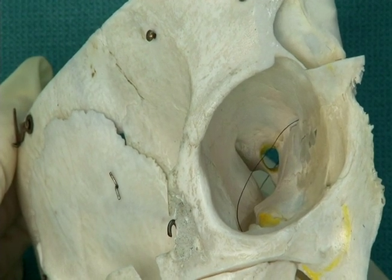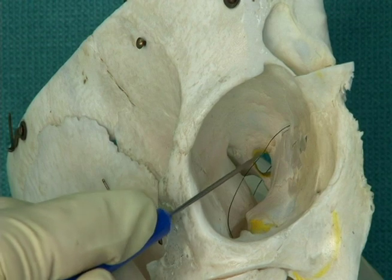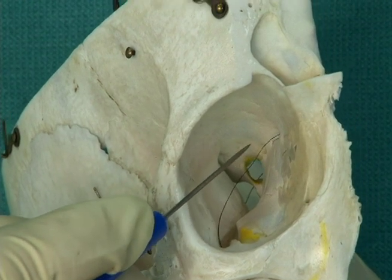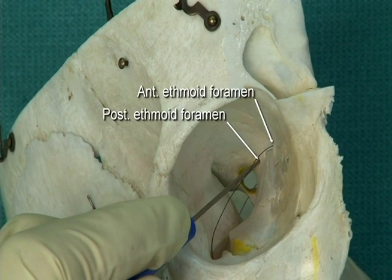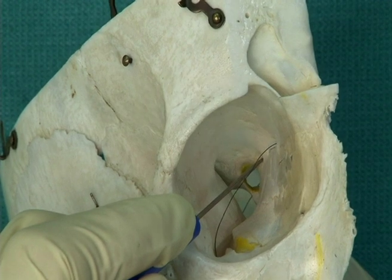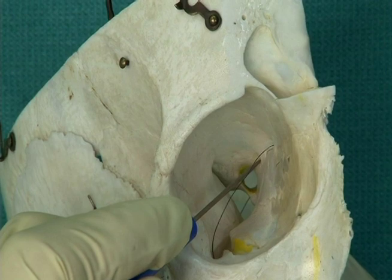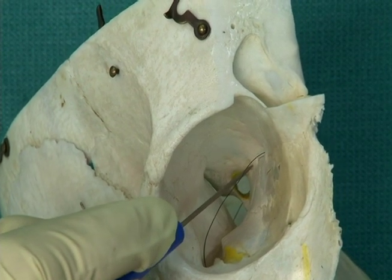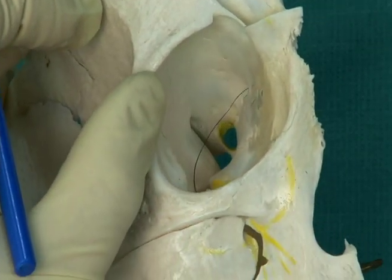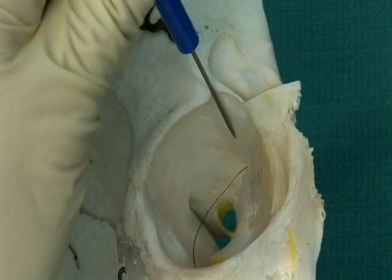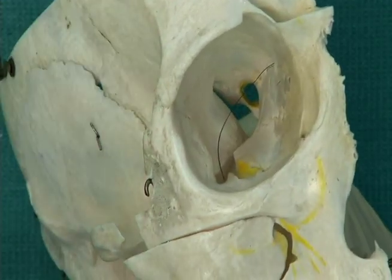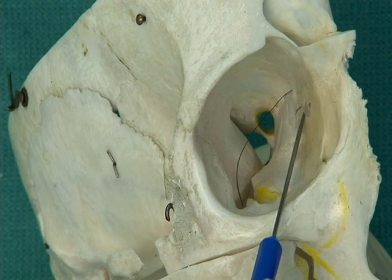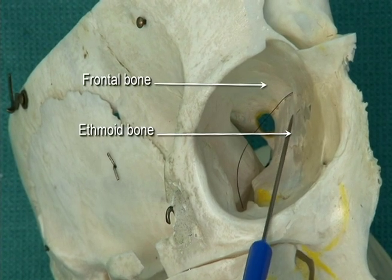Other entry points for nasal nerves and arteries are the anterior ethmoid foramen, which has a thread in it, and the posterior ethmoid foramen, if present. These foramina lie in the medial wall of the orbit, right on the suture line between the frontal bone and the ethmoid bone.